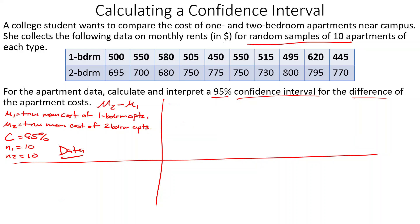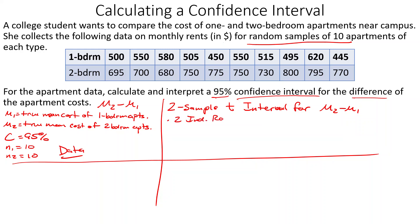Our plan is to do a two-sample t interval for mu-two minus mu-one — two-bedrooms minus one-bedrooms. If we did it backwards that's fine, we just have to interpret correctly. We have two independent random samples — an apartment can't be both a one-bedroom and a two-bedroom at the same time, so that checks out.